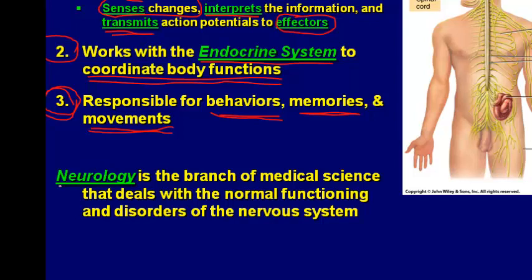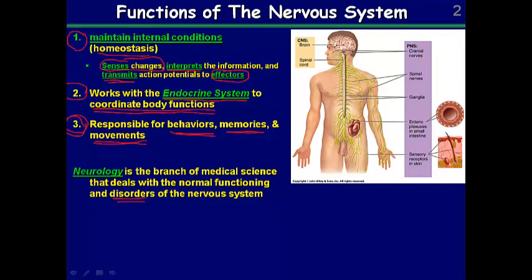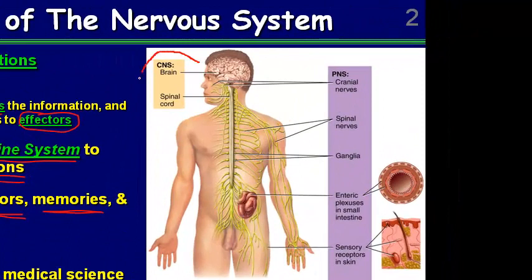The study of the nervous system is neurology, so we're going to be neurologists for most of the remainder of the semester — studying the nervous system whether it be controlling organs, interpreting visual information, or sensing our environment. Neurology is the branch of medicine that studies not just the normal function of the nervous system but also its disorders. This image shows the basics: it is divided into the CNS or central nervous system, which includes your brain and spinal cord, and the PNS or peripheral nervous system, which is everything other than your brain and spinal cord.